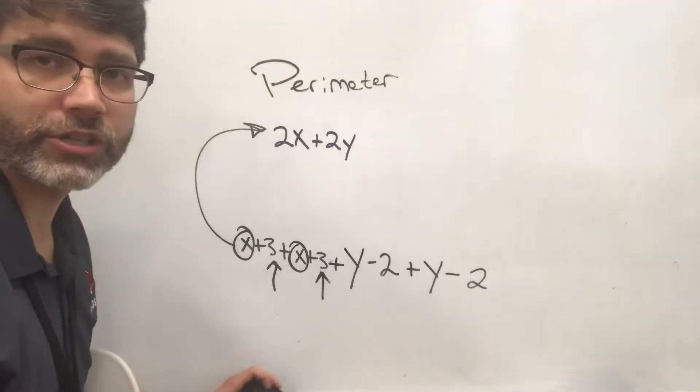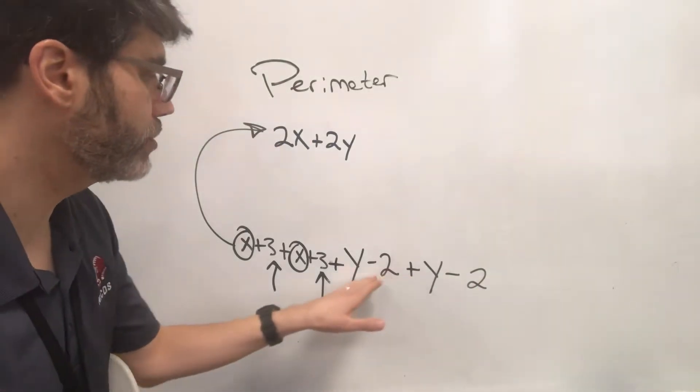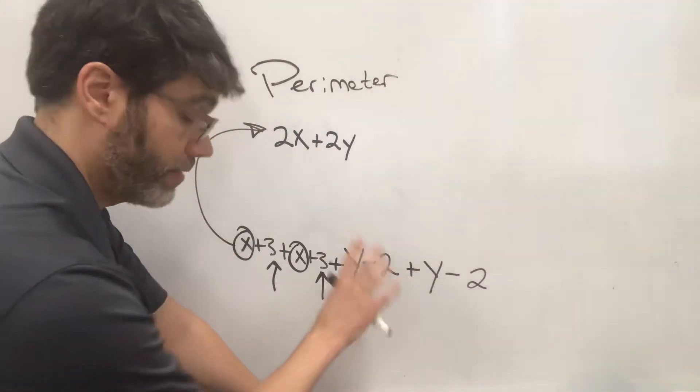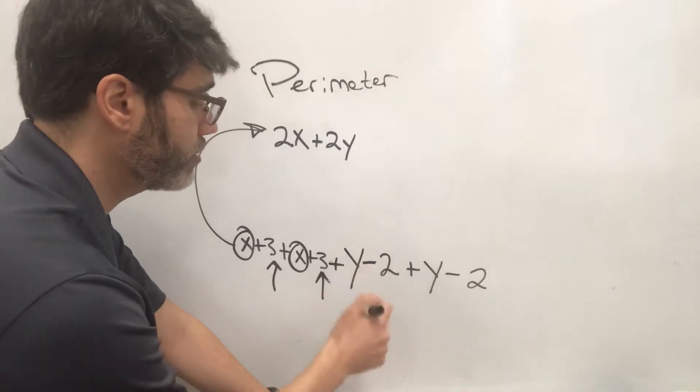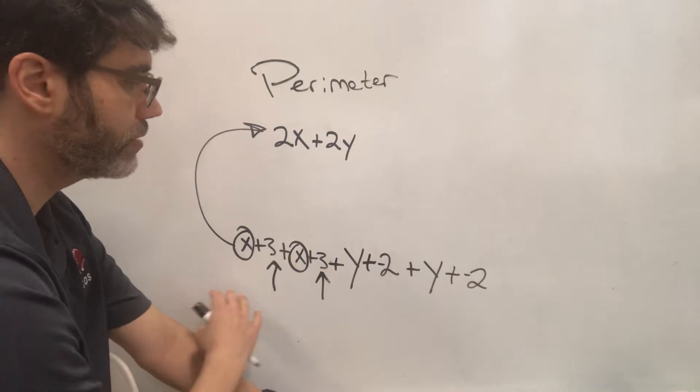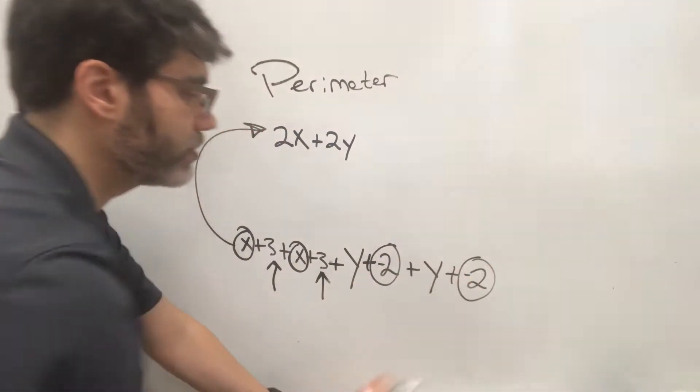So if you're not sure why these should count as negative 2s here, before you ever start out, always, and this is my recommendation, turn all of your subtraction signs into plus negatives. So you're adding all of these terms together, and now it's more obvious that this is a negative 2.